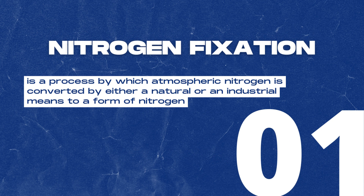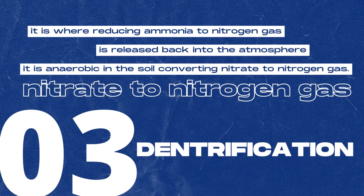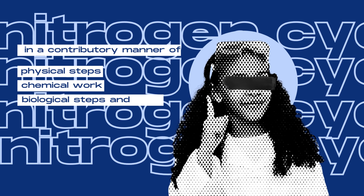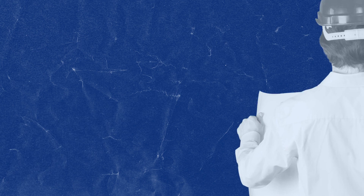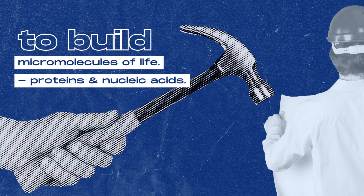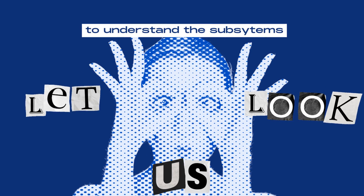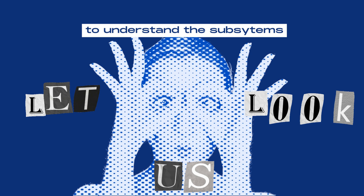Number one is nitrogen fixation. Number two is nitrification. And number three is denitrification. The subsystems of the nitrogen cycle affect each other in a contributory manner of physical, chemical, and biological steps, and work systematically in order to acquire the main function: to build vital macromolecules of life — the proteins and nucleic acids. To understand the subsystems involved in the cycle that make it possible, a closer look at the elements is necessary.